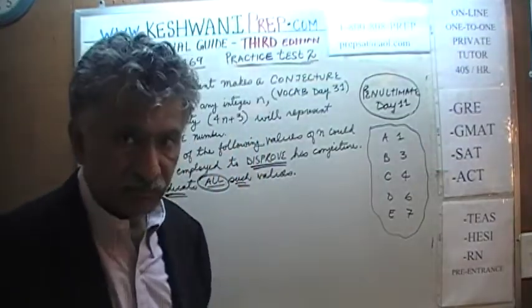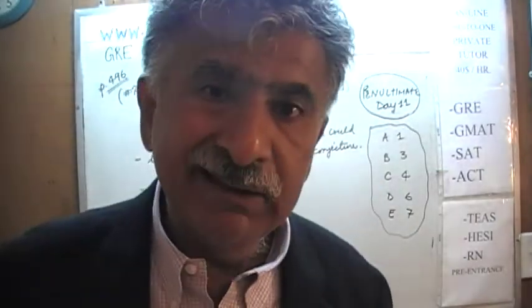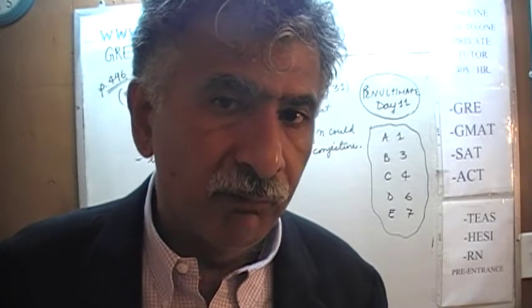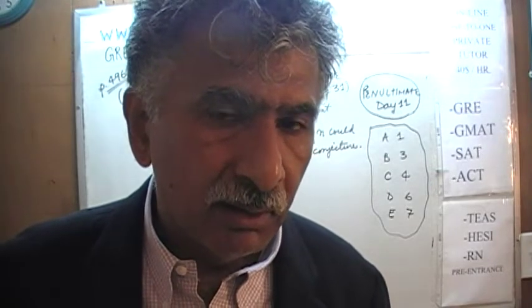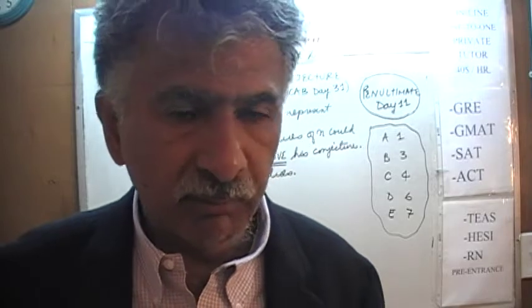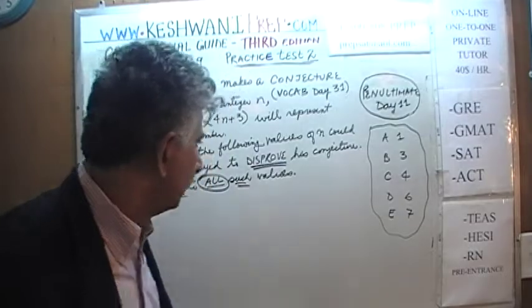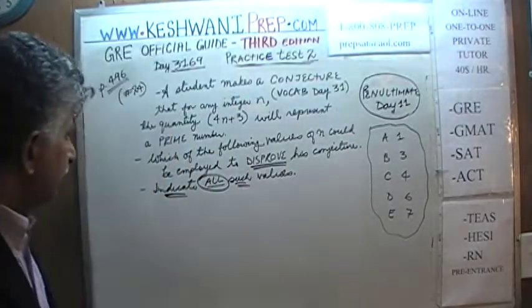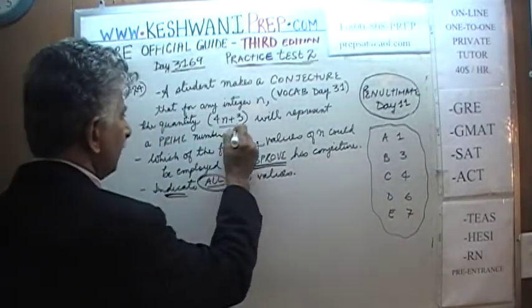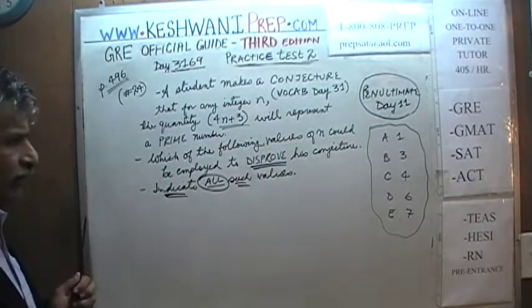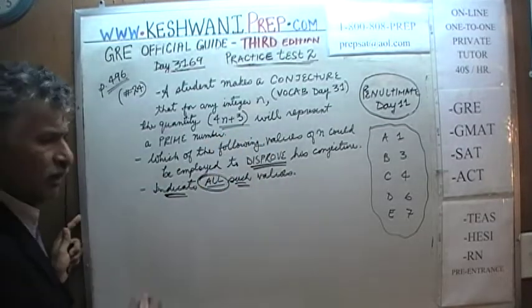Here we have 5 answer choices, though sometimes there are 6, 7, 8 — I have seen as many as 10. If out of those 10 answer choices 4 of them are valid, we must mark all 4, otherwise we will not get credit for the question. So we are going to start using these numbers, plug each into the formula 4n plus 3, and see if we can disprove the conjecture — show that the result doesn't necessarily have to be a prime number.